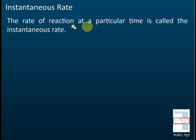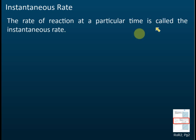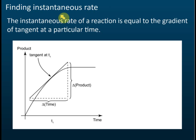The instantaneous rate is the rate of reaction at a particular time, or at an instant. An instant is a particular point in time. The rate of reaction at a particular time is called the instantaneous rate.